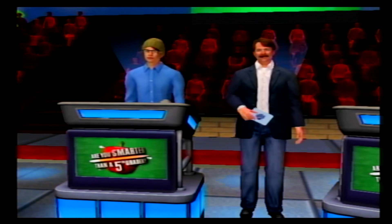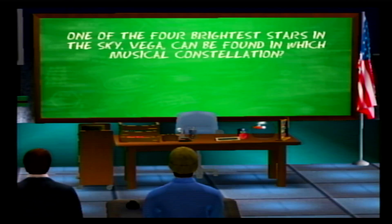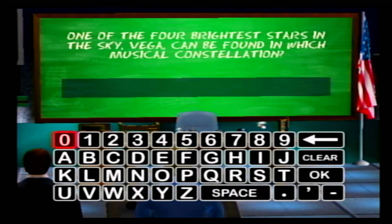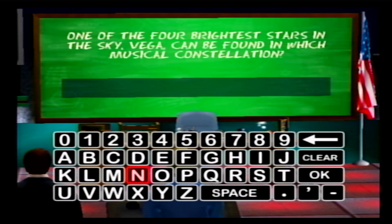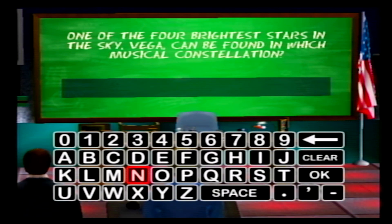It doesn't get any bigger! Playing for one million dollars. One of the four brightest stars in the sky — Vega — can be found in which musical constellation? Oh, you have to type it in. Is there a harp constellation? Virgo holds a harp. Lyra! Maybe google it — four brightest stars, Vega, musical constellation. It's Lyra — L-Y-R-A. Holy shit, I was right! We would have had it — we won!